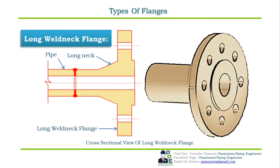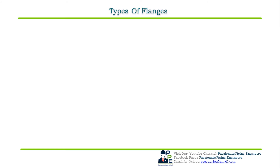The sixth type is the long weld neck flange. Long weld neck flanges are similar to weld neck flanges, except that the neck or hub is extended and acts like a boring extension. This long neck guides the pipe into the flange and provides reinforcement that the standard weld neck flange does not provide. Long weld neck flanges are generally used on vessels and columns as the connecting flange to nozzles, and are used in high pressure and high temperature environments.